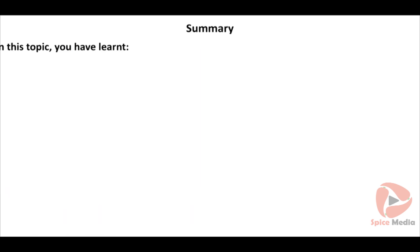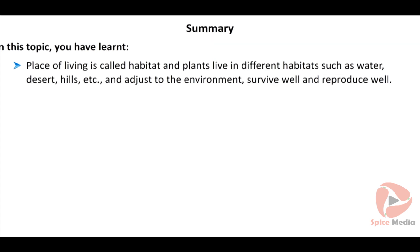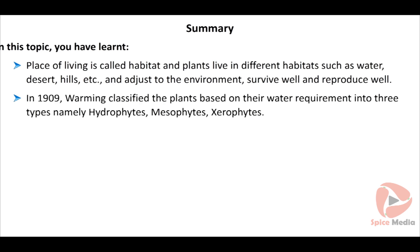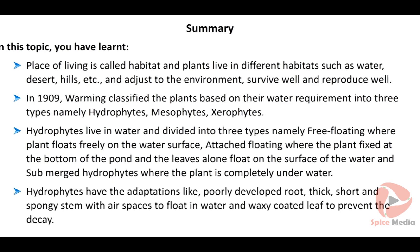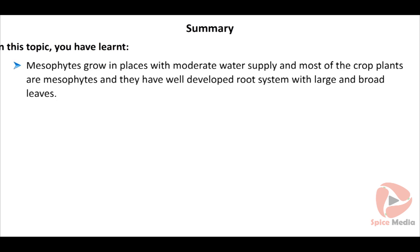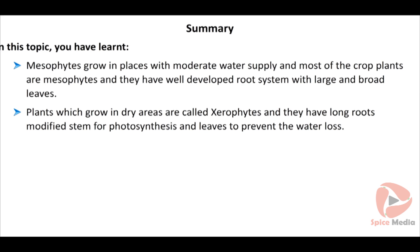In this topic you have learnt: place of living is called habitat and plants live in different habitats such as water, desert, hill, etc., and adjust to the environment. In 1909, Warming classified plants based on their water requirement into three types: hydrophytes, mesophytes, and xerophytes. Hydrophytes live in water and are divided into free floating, attached floating, and submerged types. Mesophytes grow in moderate water supply with well-developed roots and large broad leaves. Xerophytes grow in dry areas with long roots, modified stems for photosynthesis, and modified leaves to prevent water loss.